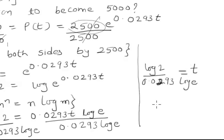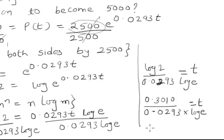Now if I look for this value, log 2 is 0.3010. If you substitute the values, this gives you t and it comes out to be 23.65, or approximately say 24 years.